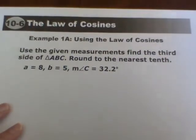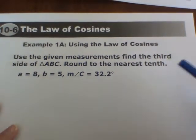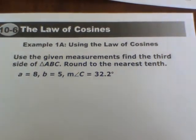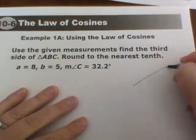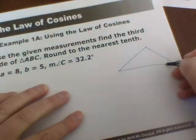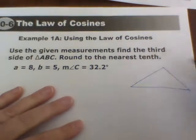So first thing that we're looking at in our first example is to use these given measurements to find the third side, and we need to round to the nearest tenth. So looking at the triangle that they gave us,